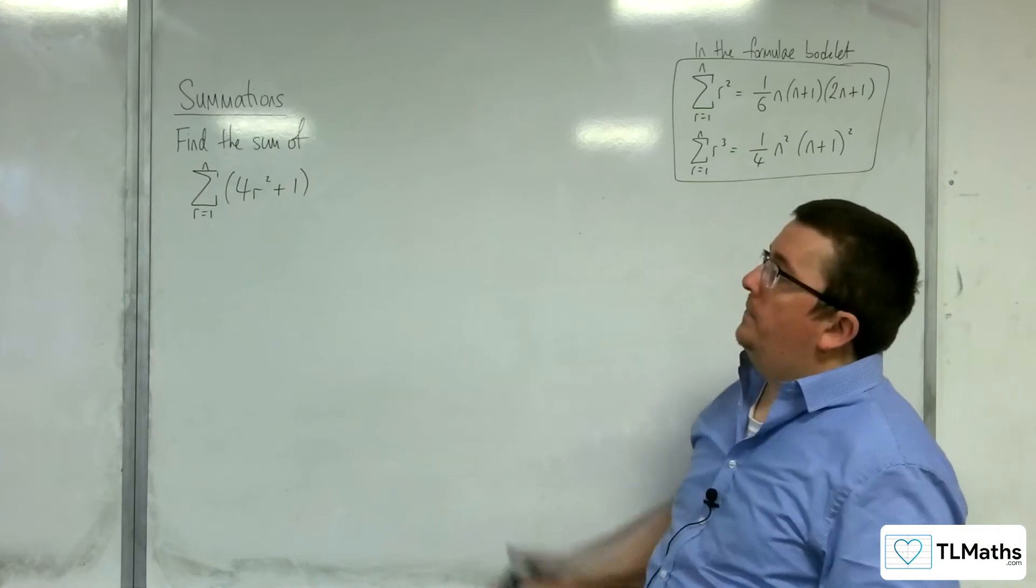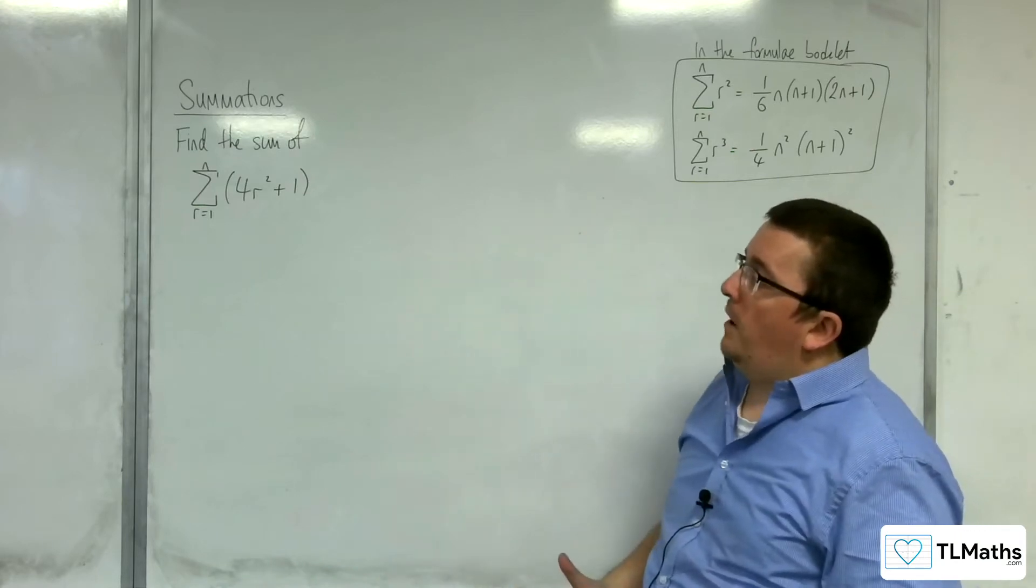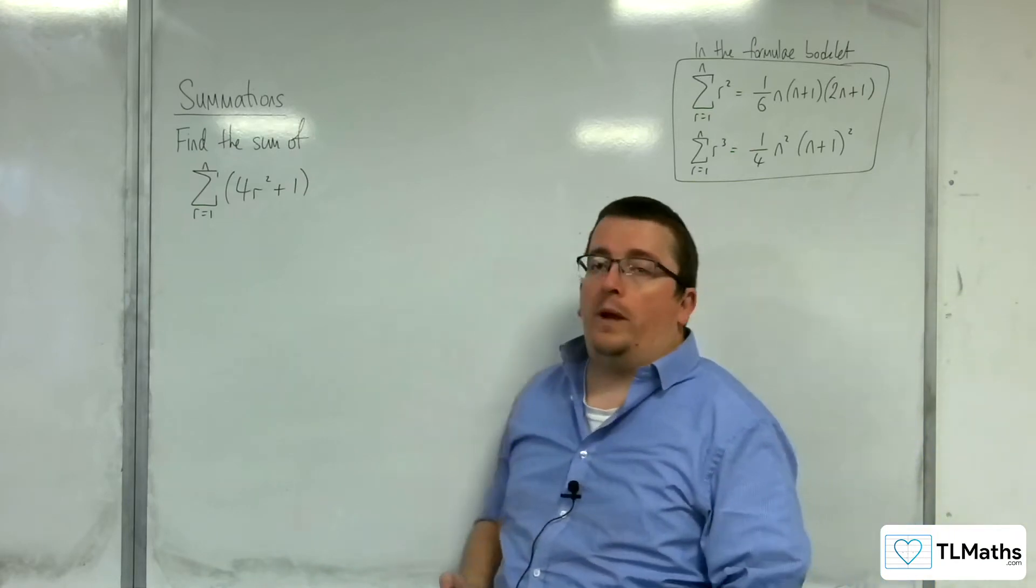The first example we're going to look at is find the sum from r is 1 to n of 4r squared plus 1.